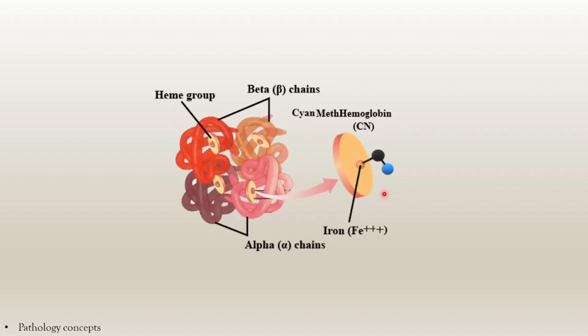When a cyanide group is combined with methemoglobin, it is called cyanmethemoglobin. It is a method of measuring hemoglobin in vitro. All types of hemoglobin can be converted to cyanmethemoglobin except sulfhemoglobin. The concentration is measured by spectrophotometer at a wavelength of 540 nanometers.